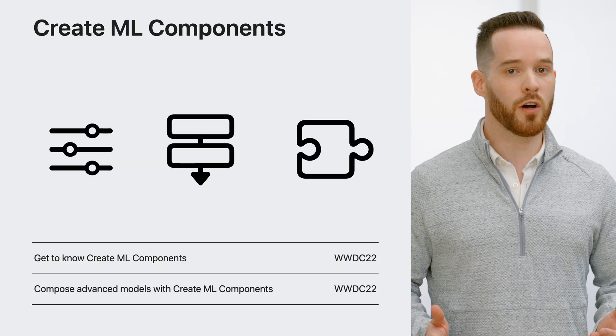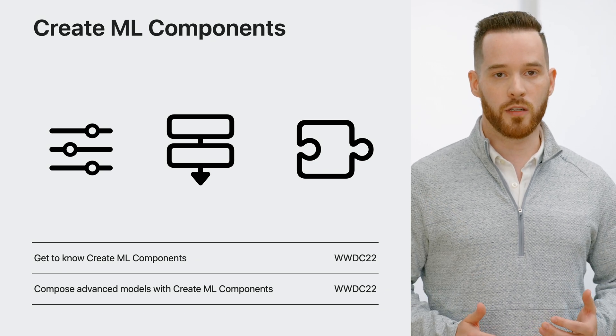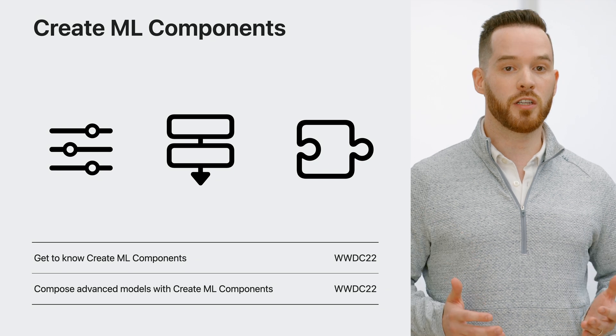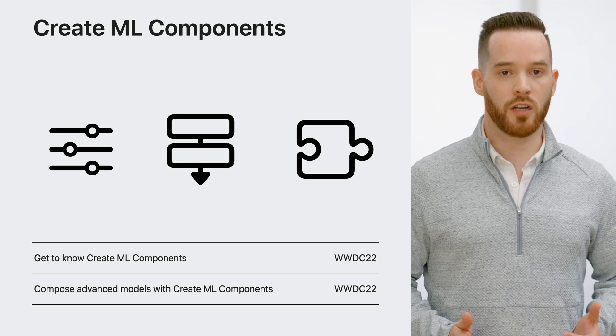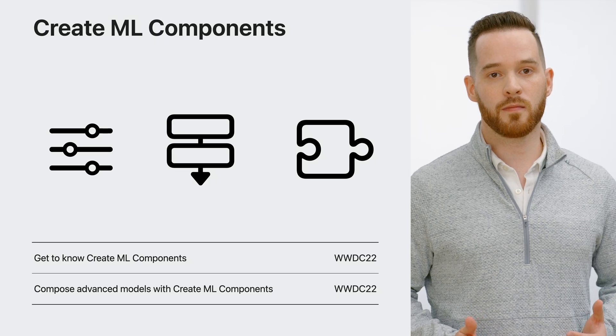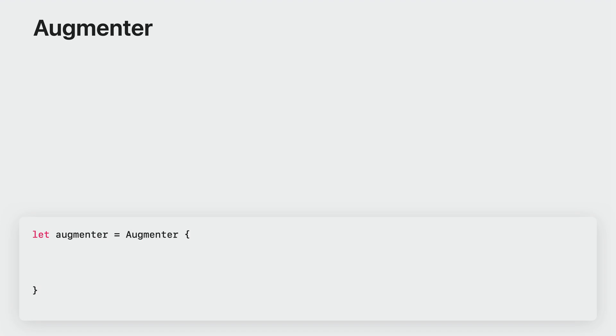If you haven't already, make sure to watch our videos from WWDC 2022 where we introduced CreateML components — a framework designed to help you build custom machine learning models using components like transformers and estimators. This year, we added new augmentation APIs that you can use to design your own custom augmentation pipelines. If you have experience with SwiftUI, this may be familiar to you. The first step is to create an augmenter. Similar to SwiftUI, the augmenter uses result builders. In the body of the augmenter, you can add transformations to augment your data. Since the augmenter is generic, your data can be labeled images, labeled sounds, or even something else. The important part is that the input and output types of each transformation need to match — for example, taking an image and producing an image.